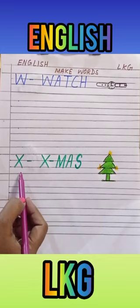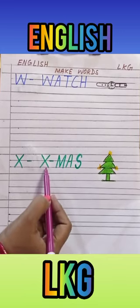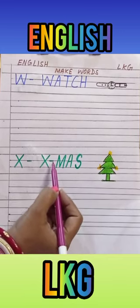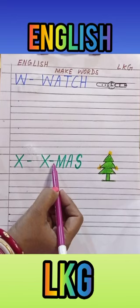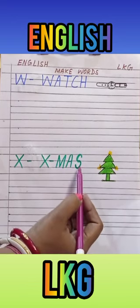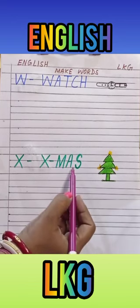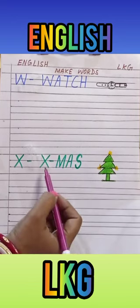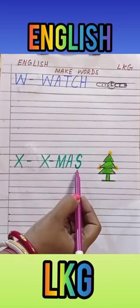What is the spelling of Xmas? X, then we will write it. Okay? M, A, S. Xmas. Okay? X for Xmas.